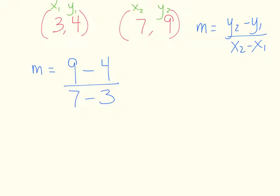Now, like all things, we need to simplify this down. This is not done. So what is 9 minus 4? It's 5. What is 7 minus 3? It's 4. Now, you have done your slope. That is your slope when you're dealing with two points.